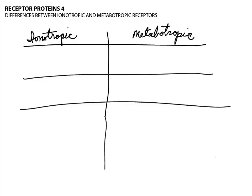One of the differences between the two is the speed at which the receptor is able to produce a change in the membrane potential. Ionotropic receptors are very fast compared to metabotropic receptors. The reason for that is that with the ionotropic receptor, when the neurotransmitter binds to the receptor, the receptor itself becomes an ion channel, allowing the ions to move through that channel and change the membrane potential.